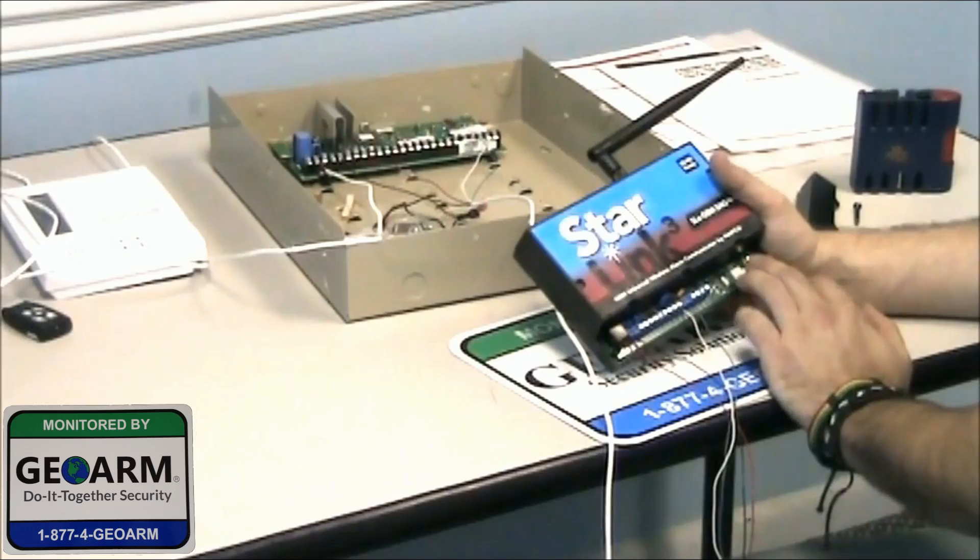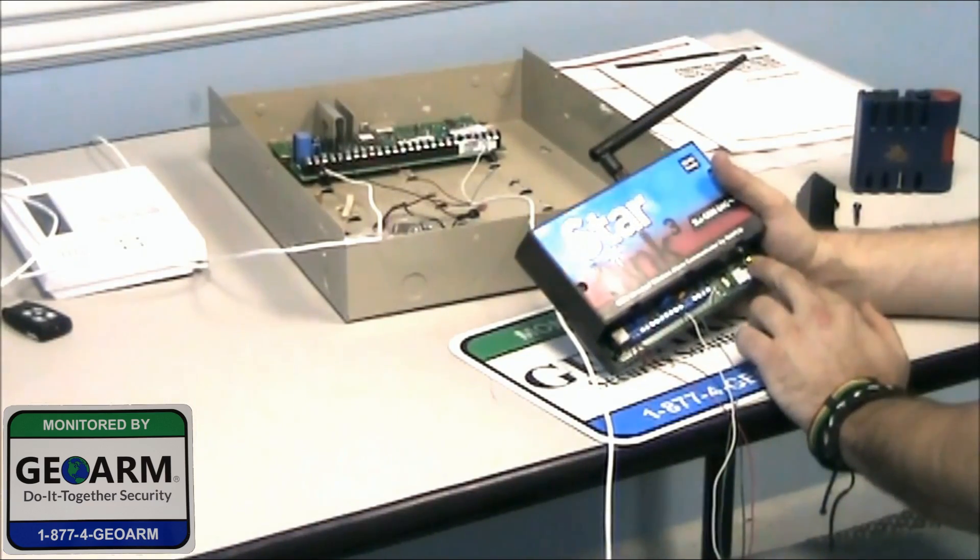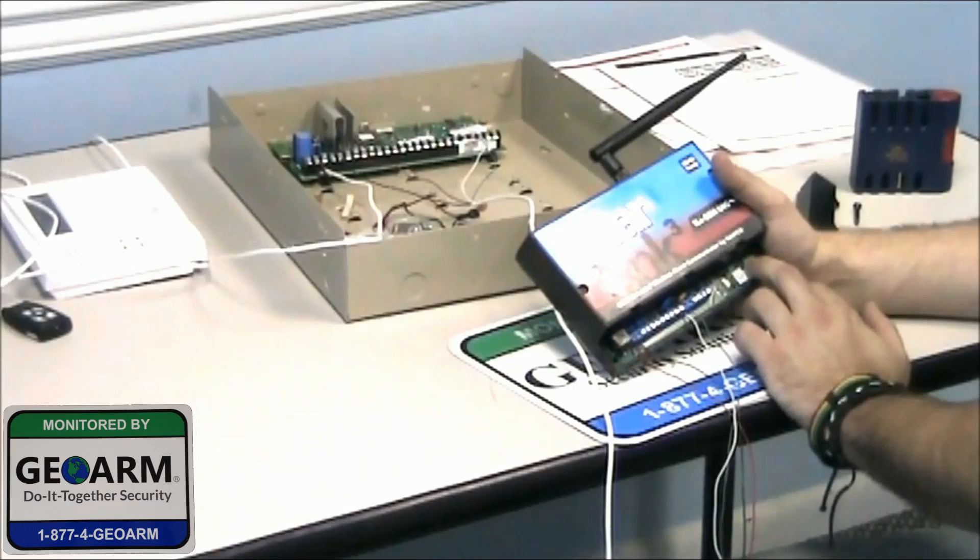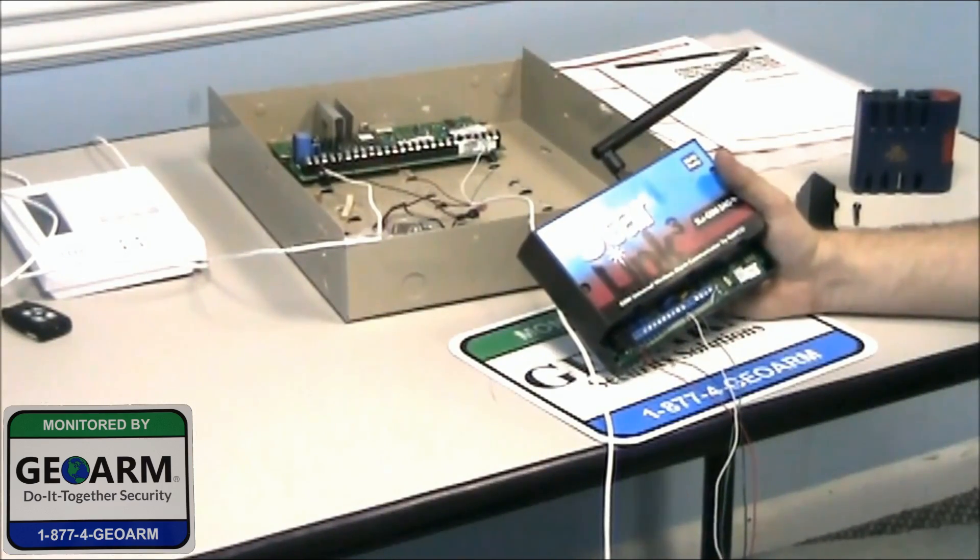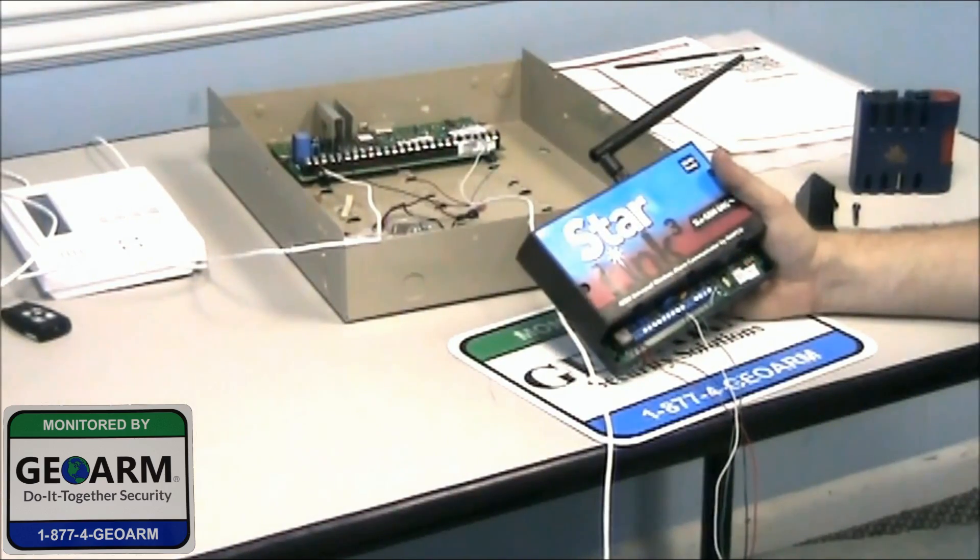Once you have it wired correctly, you'll start seeing lights flashing. They will change when we get them registered, but seeing the lights flashing is a good start. And that is how you wire in a Starlink communicator into a Vista 20P panel.